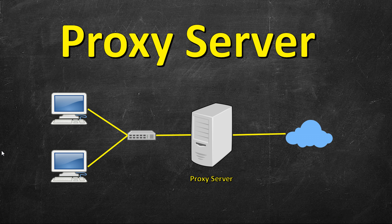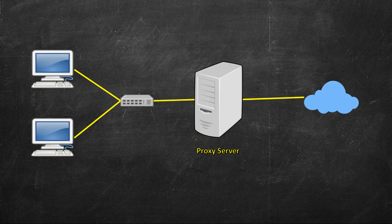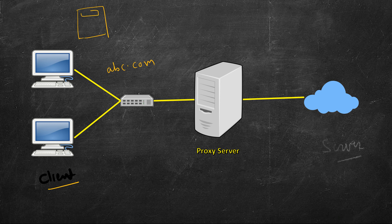In this video we will study about proxy servers. There is a client and there is a server. The client sends a request — let's say the client wants to browse to some website abc.com, so the client will open a browser and type abc.com. This client machine will have some IP address, let's say 10.20.30.40, and this request is sent to the server.